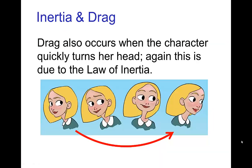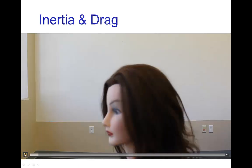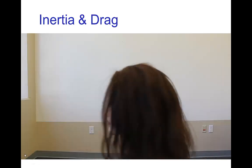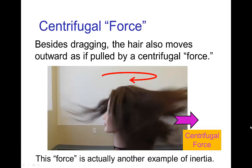We have a similar drag when the character swings her head around — the hair trails behind. Again, the same effect of inertia. Besides the hair dragging behind, it also flies outward. If you watch the hula skirt video again, you'll notice that when turning the hips, the hula skirt flounces outward.